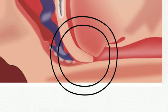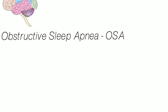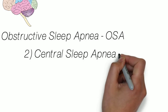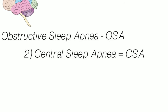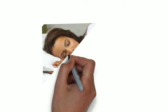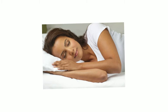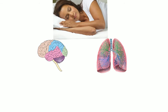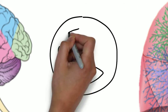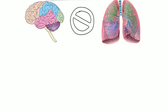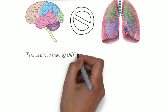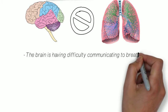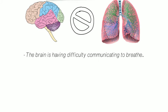The second is central sleep apnea. Unlike obstructive sleep apnea, there is no blockage in the airway. Here the brain fails to communicate to the muscles to breathe. This is due to an unstable respiratory center in the brain where breathing is controlled.